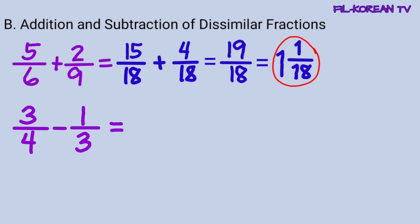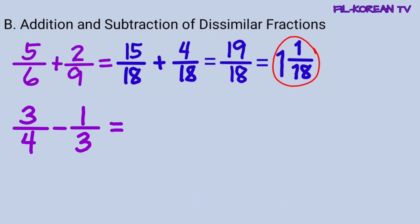Now, let's subtract 3 fourths minus 1 third. Yung una nating gagawin, kunin natin yung LCD dahil yung denominators ay hindi pareho. Dito naman, ang denominators na 4 at 3 ay magkasunod na number. Wala silang ibang common factor maliban sa 1. Kaya, para mabilis natin makuha ang LCD, ang gagawin lang natin ay i-times lang natin silang dalawa. Kapag yung dalawang number ay magkasunod o para yung prime numbers, i-times ninyo yung dalawang number para makuha ang LCD. 4 times 3 equals 12. So, ang LCD ay 12.